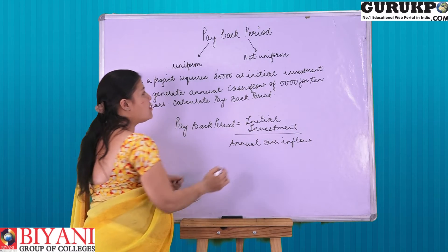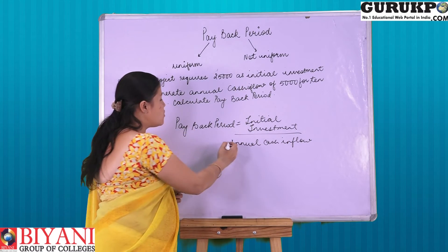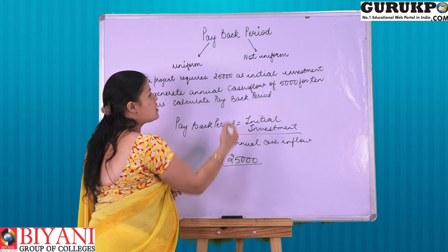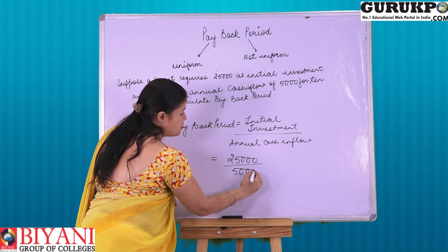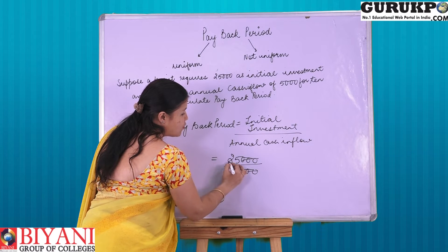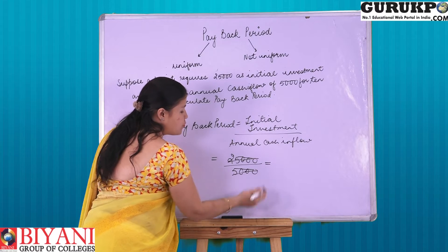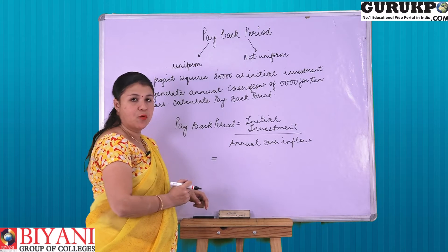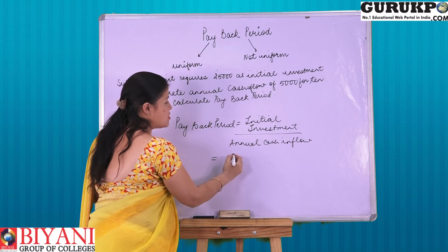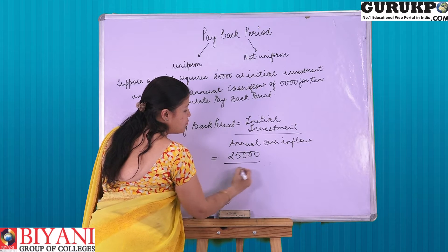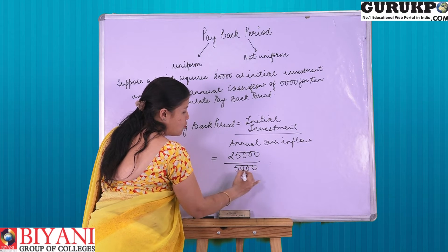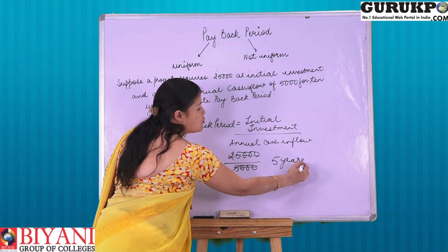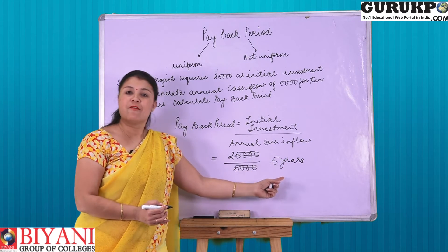Here our initial investment is 25,000 rupees and annual cash inflow is 5,000. After calculating — 25,000 divided by 5,000 — it concludes that we are going to get back our 25,000 investment in 5 years.